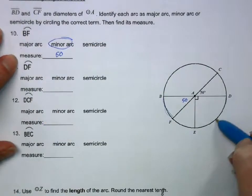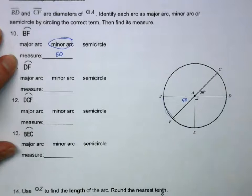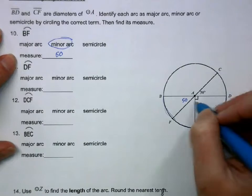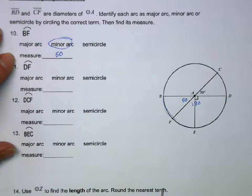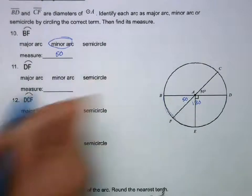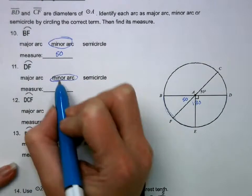DF, okay, if this is 50, then this is going to be 130 if I subtract from 180. So that is a minor arc still because it's less than 180.